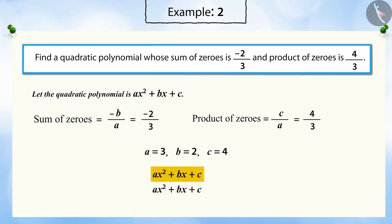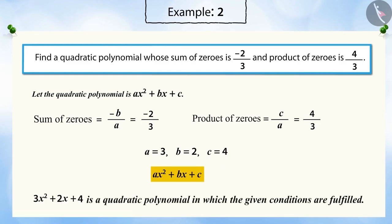Substituting the values of a, b, and c, we get a quadratic polynomial 3x² + 2x + 4, where we get a quadratic polynomial in which the given conditions are fulfilled.